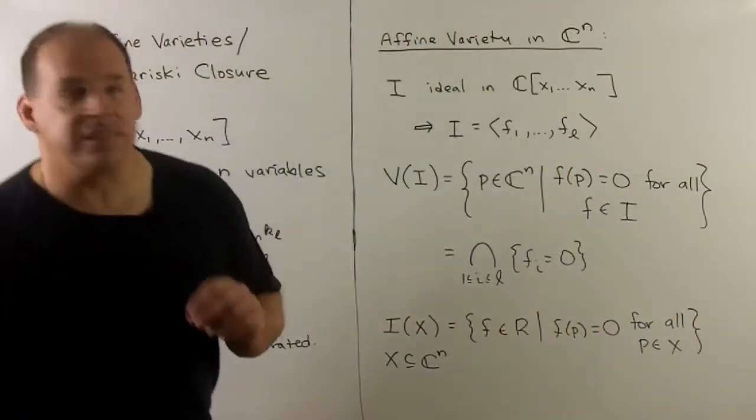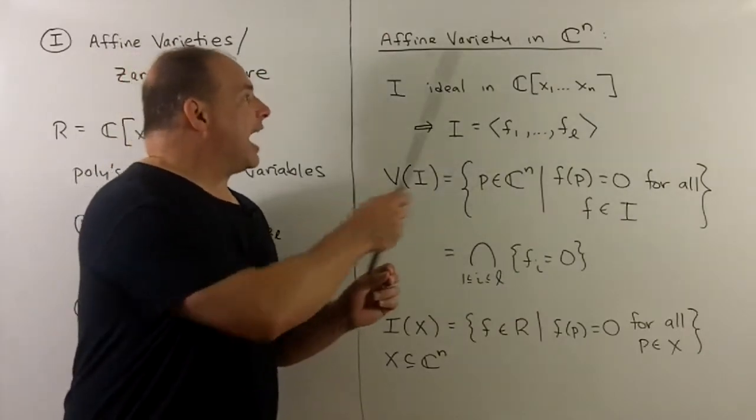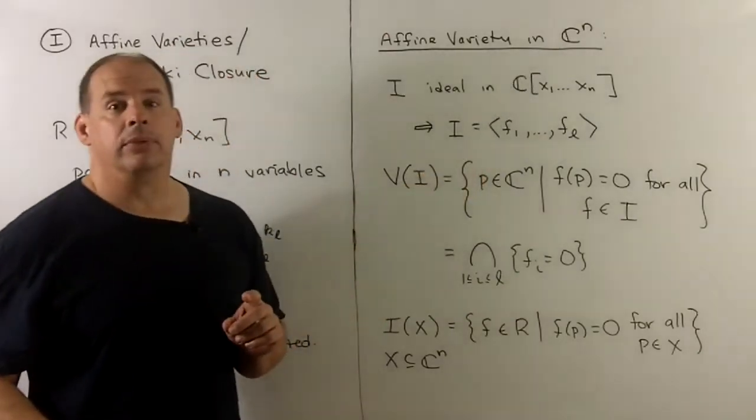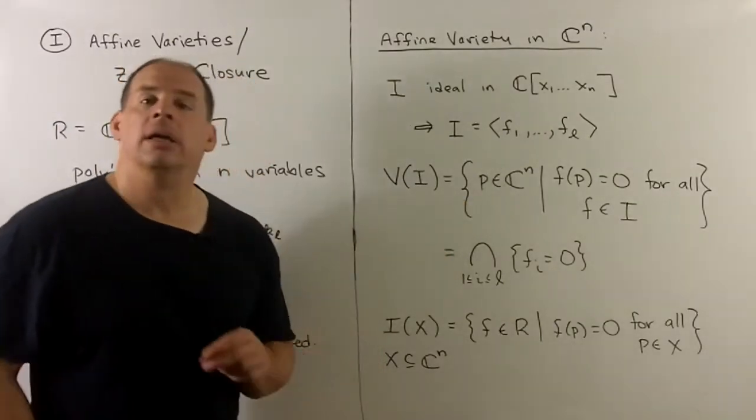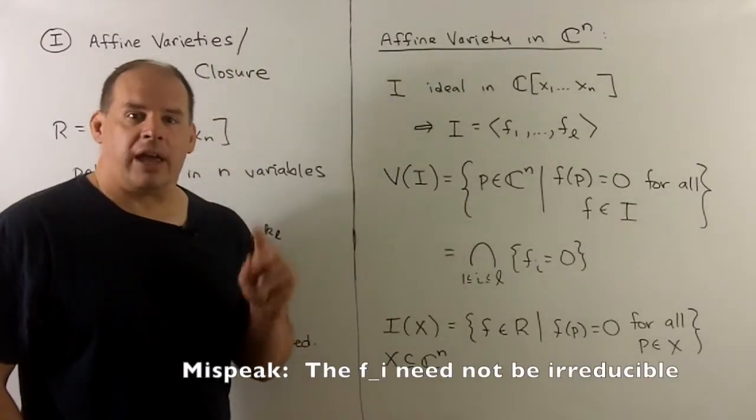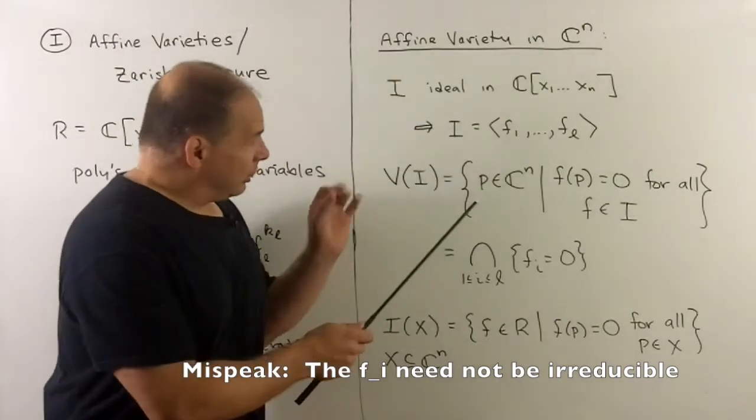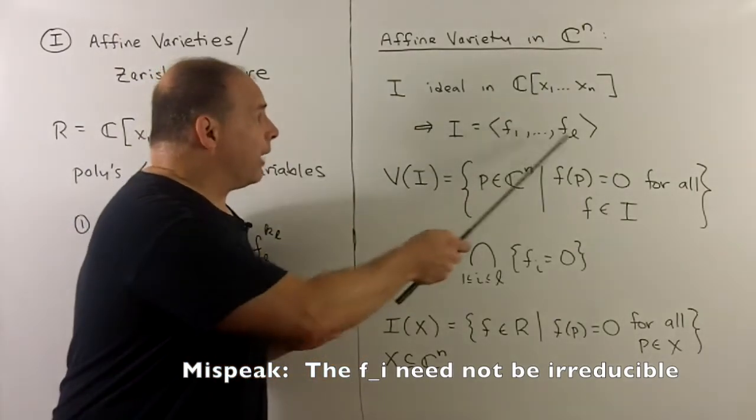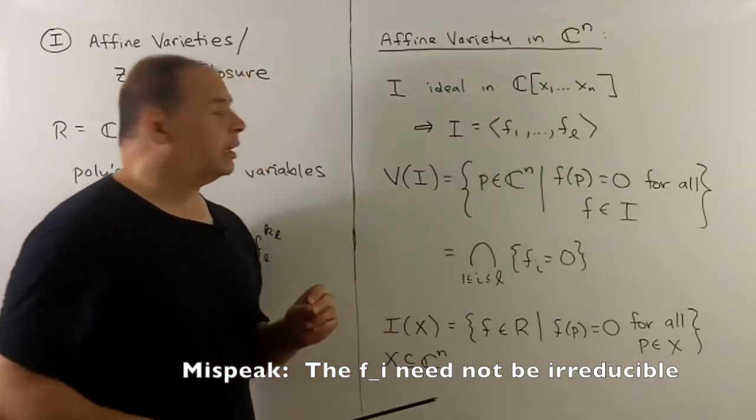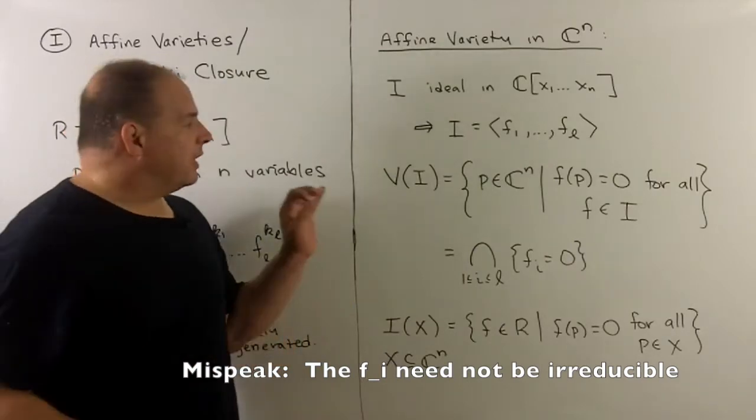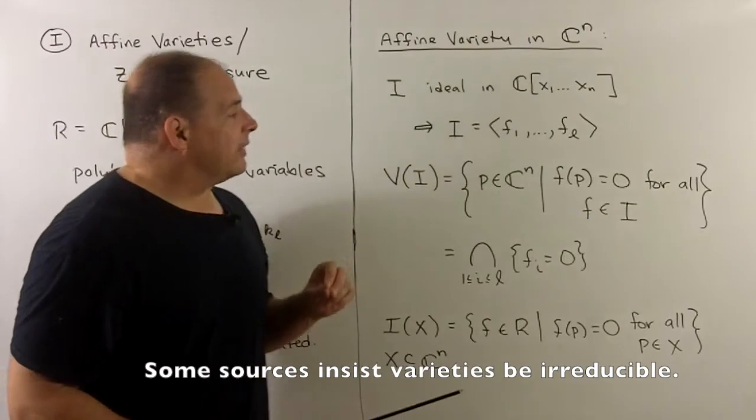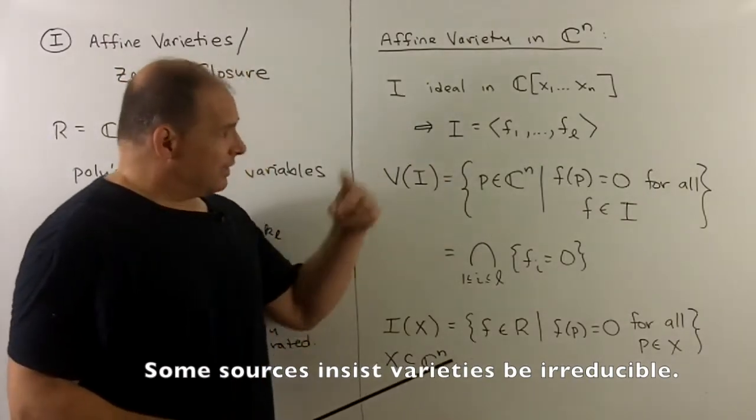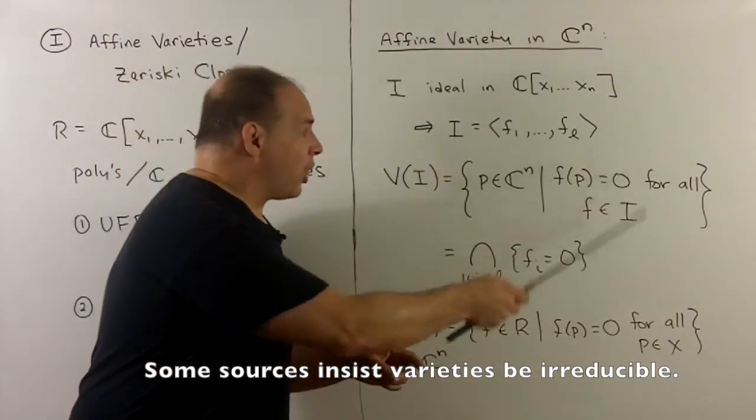Now, that gets us to the definition of an affine variety in Cn. So what we'll do, we'll start with an ideal in R. Since it's finitely generated, I can write it as being generated by irreducible polynomials F1 through FL. Then that gives us our definition. I have V of I. This is just going to be the common set of zeros for all F in our ideal.